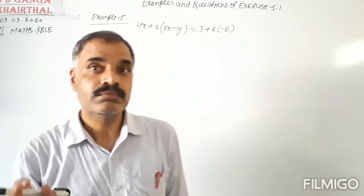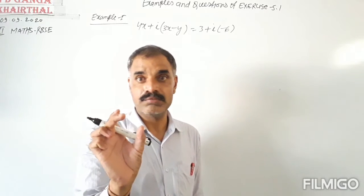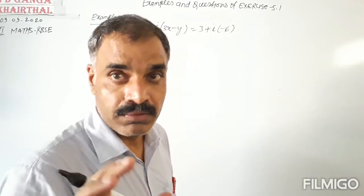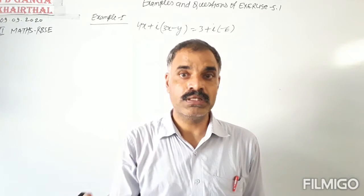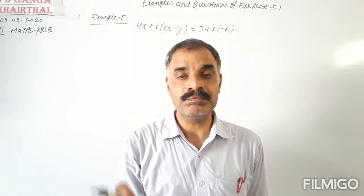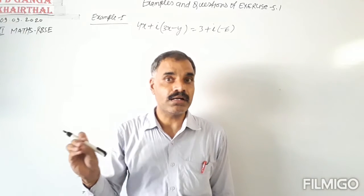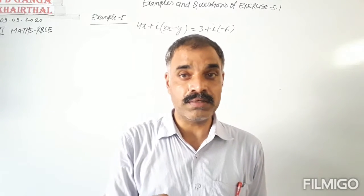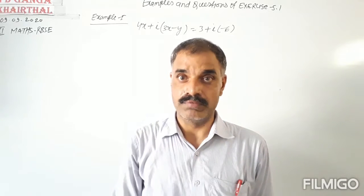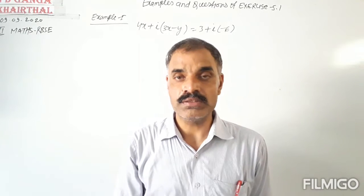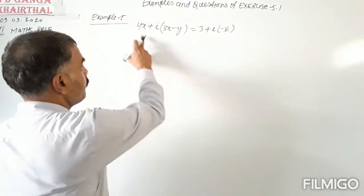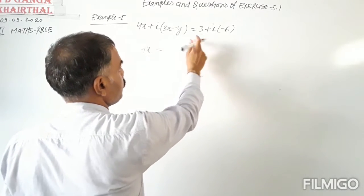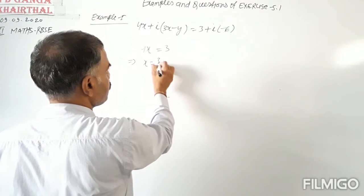This is the first example, in which two complex numbers are given equal and we have to find the values of X and Y. Two complex numbers are equal if their corresponding parts are equal — the real part of the first equals the real part of the second, and the imaginary part of the first equals the imaginary part of the second. Here, the real part of the first complex number is 4X and the real part of the second is 3, so 4X = 3, meaning X = 3/4.